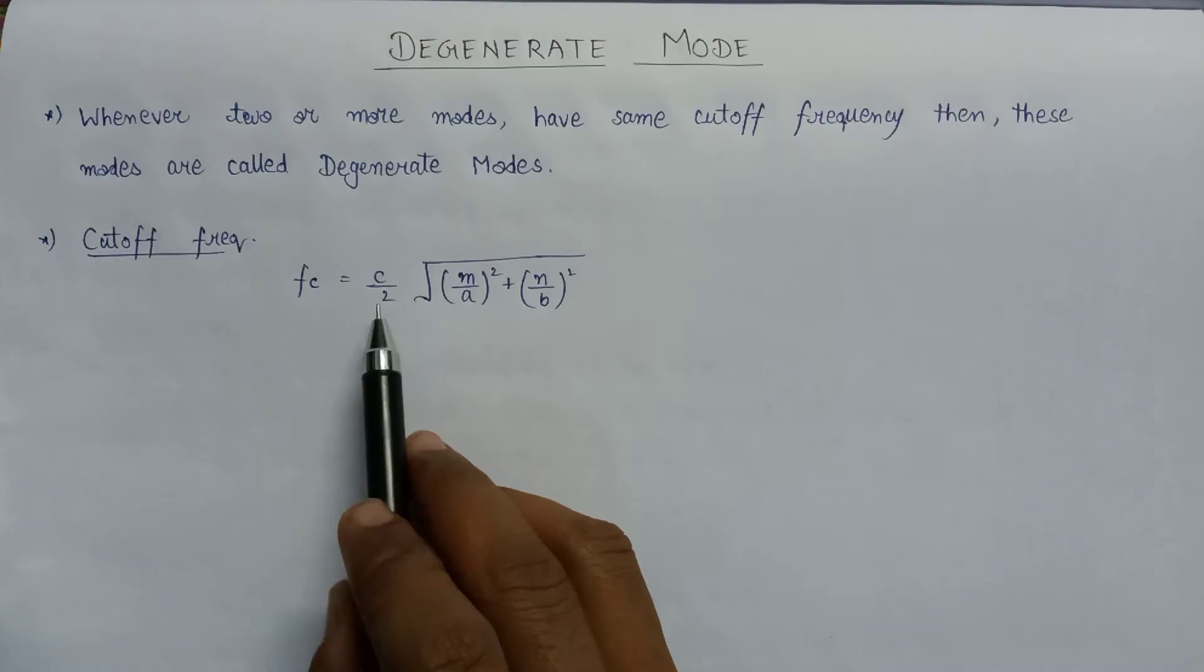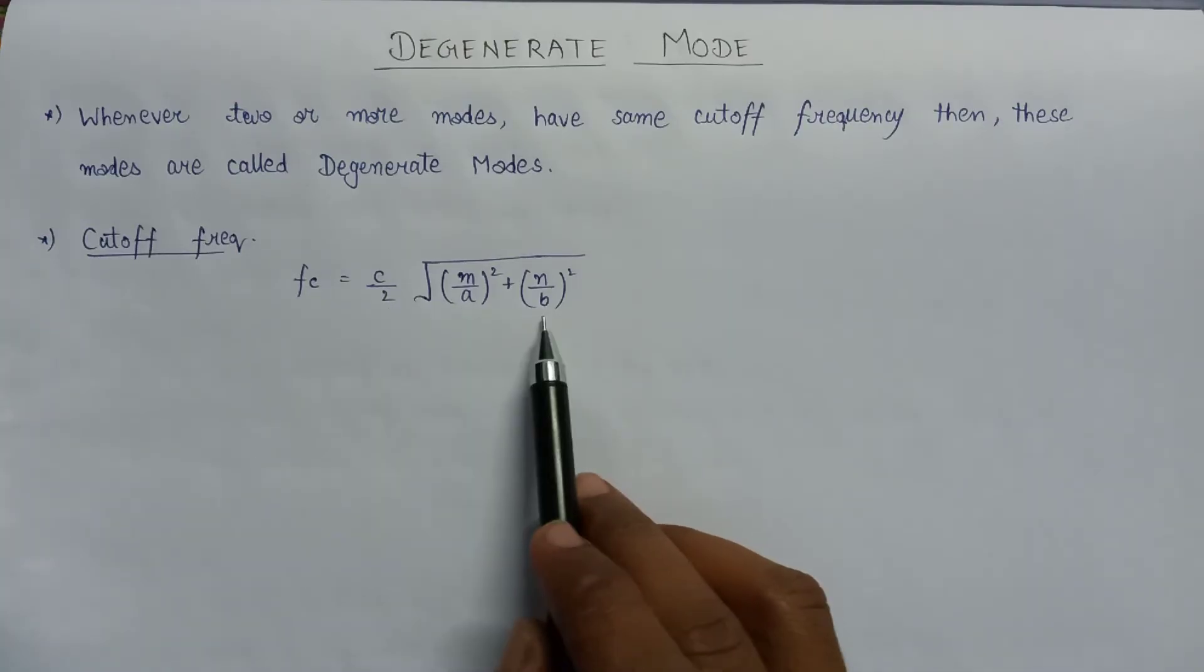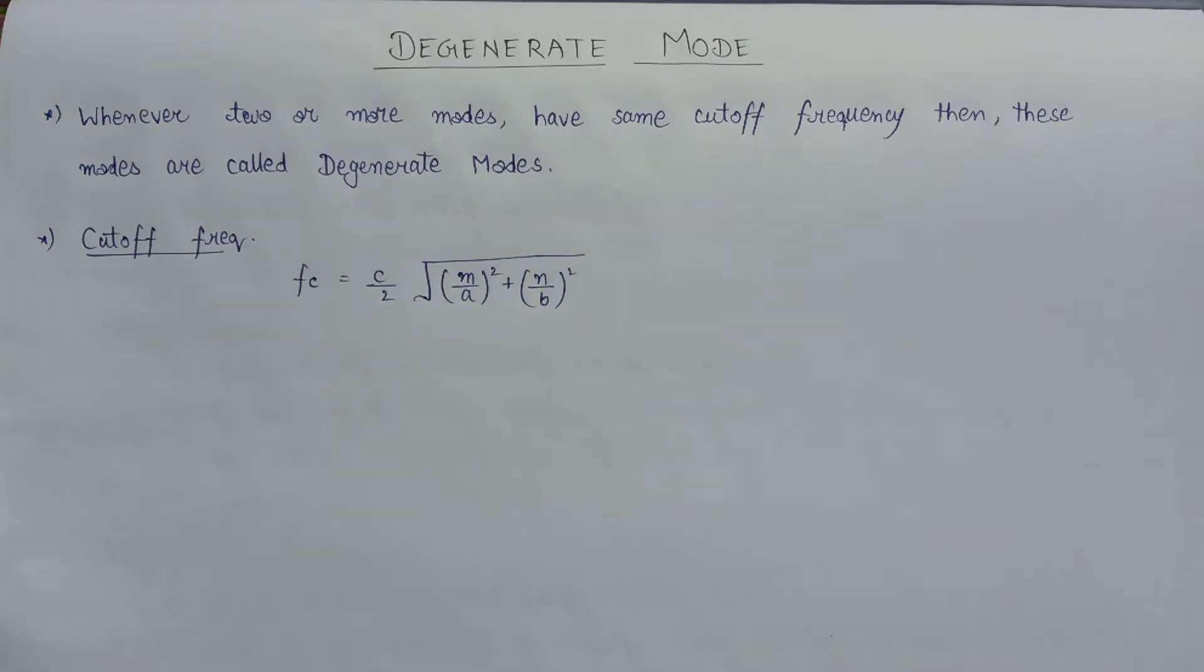Here c is the velocity of light in the vacuum and a and b represent the dimensions of the waveguide.